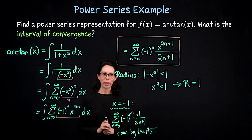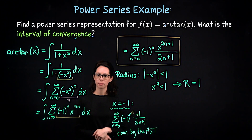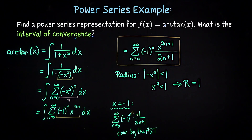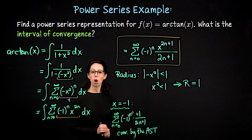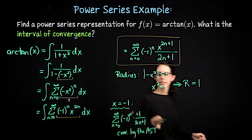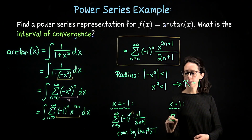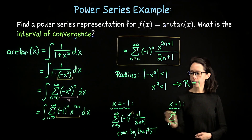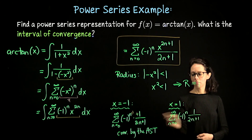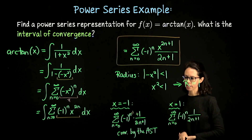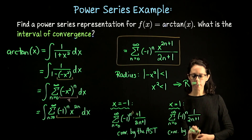Now try the right endpoint. What happens if you plug in x equals 1? Hopefully you concluded that you also get convergence when x equals 1 by the alternating series test. When x equals 1 the numerator becomes 1, so we're looking at the series from n equals 0 to infinity of negative 1 to the n over 2n plus 1. This also converges by the alternating series test.